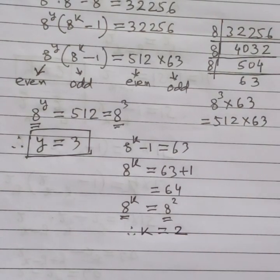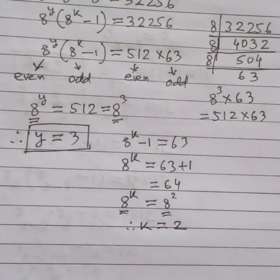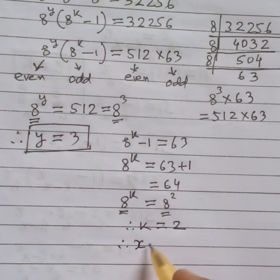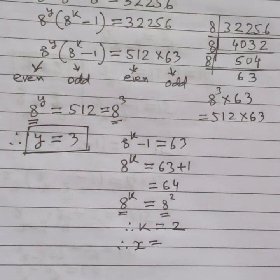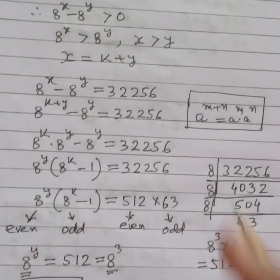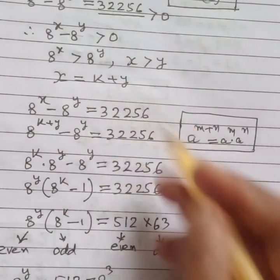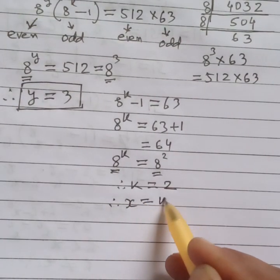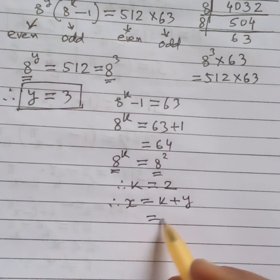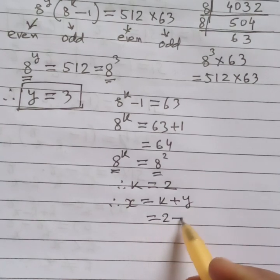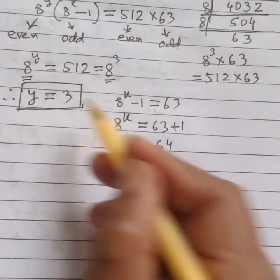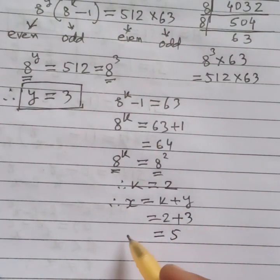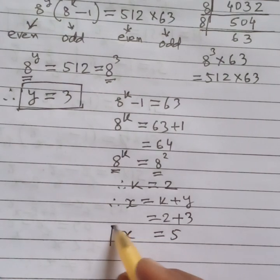Since x equals k plus y, we have x equals 2 plus 3, which equals 5. So x equals 5.